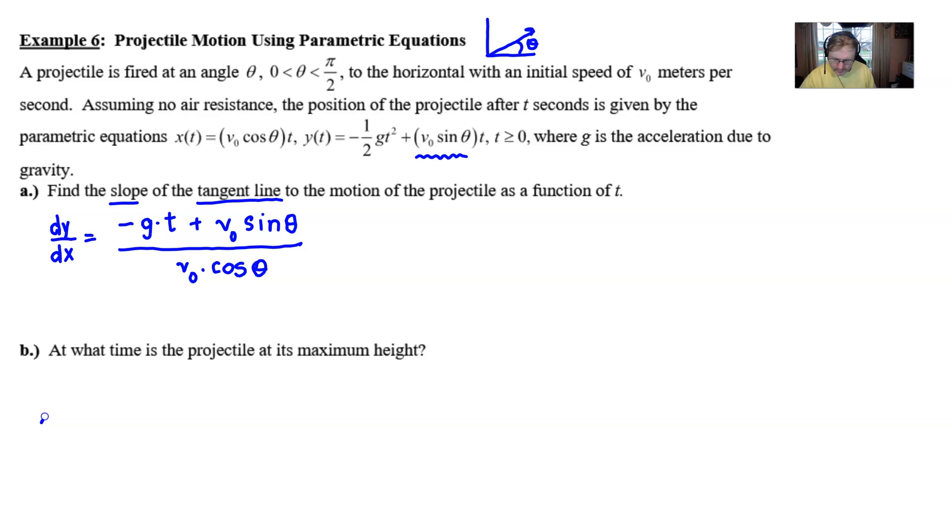Whenever we have a curve that looks like this and we have its maximum height, we know that we achieve that potentially when the derivative is equal to zero. And that's why we've always set derivatives equal to zero to find these extrema.